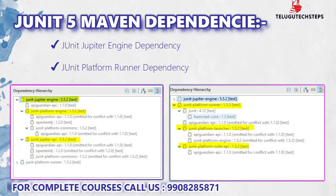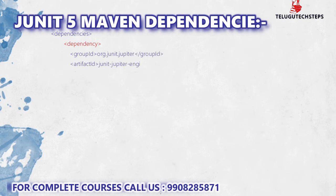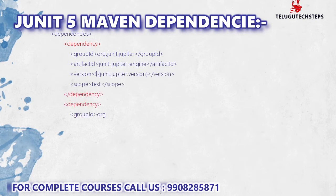First of all, if you want to use JUnit 5 in your Maven or Gradle projects, you need to include two dependencies: JUnit 4 had only one dependency, but JUnit 5 requires two — JUnit Jupiter Engine Dependencies and Platform Runner Dependencies.